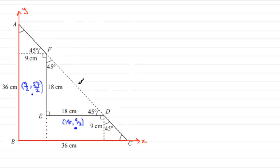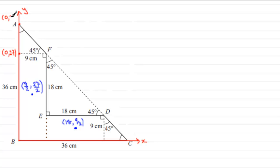For the two triangles, we work out the mean of the three vertex coordinates. Starting with the first triangle: one vertex is at (0, 27), the next is at (0, 36), and the third vertex at f has coordinates (9, 27).